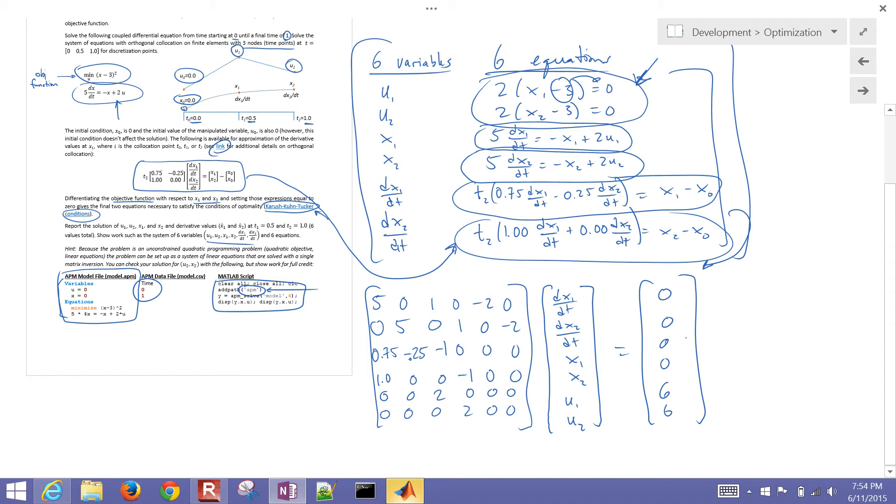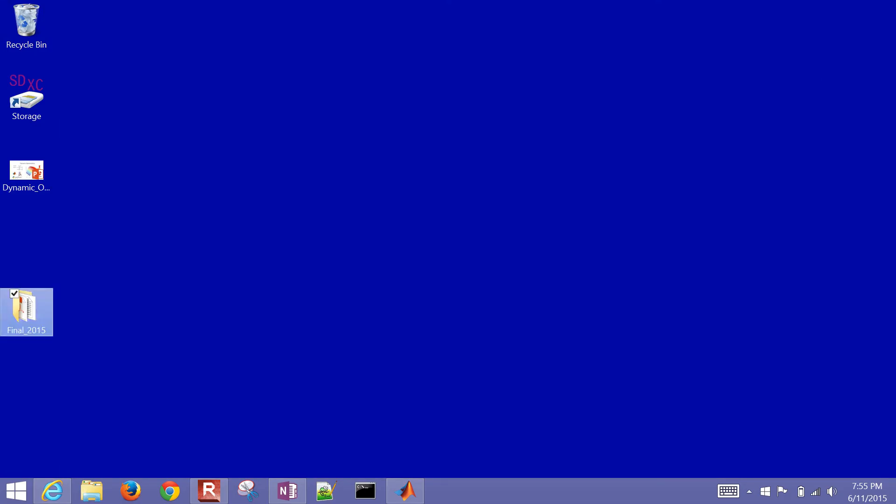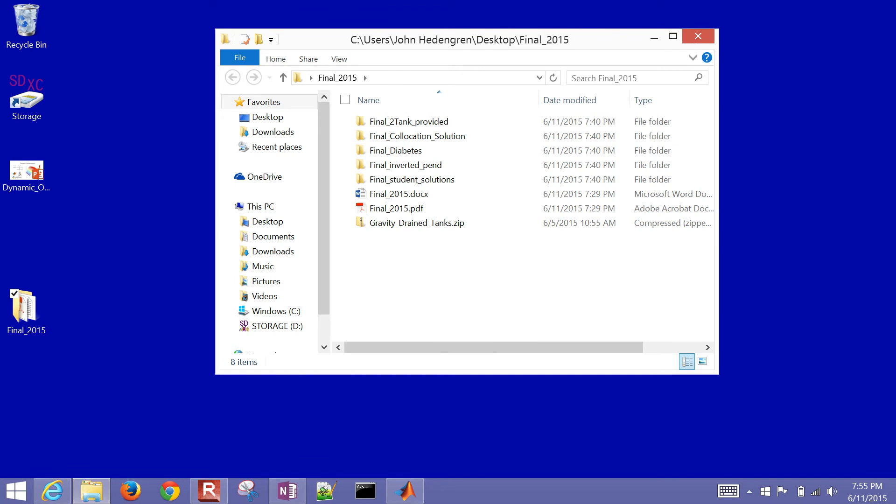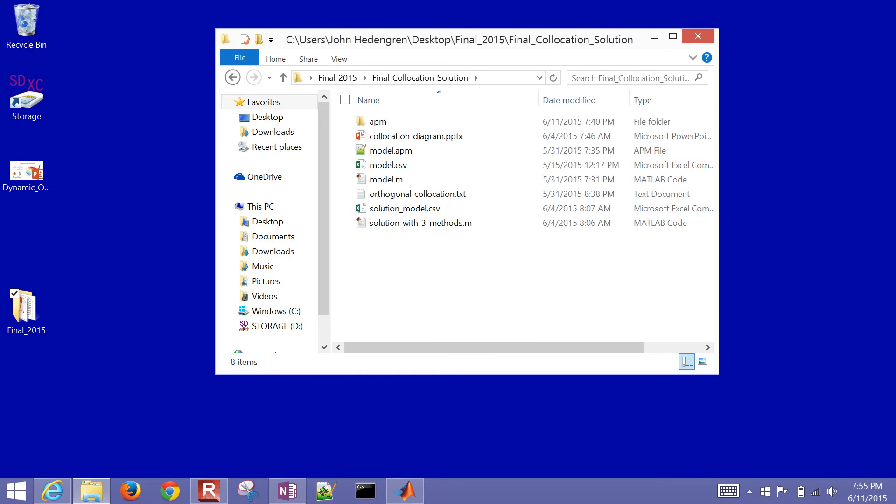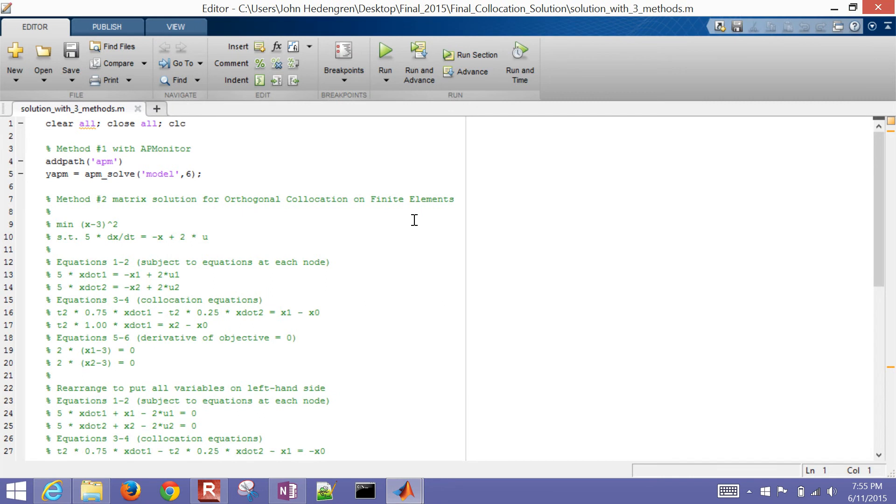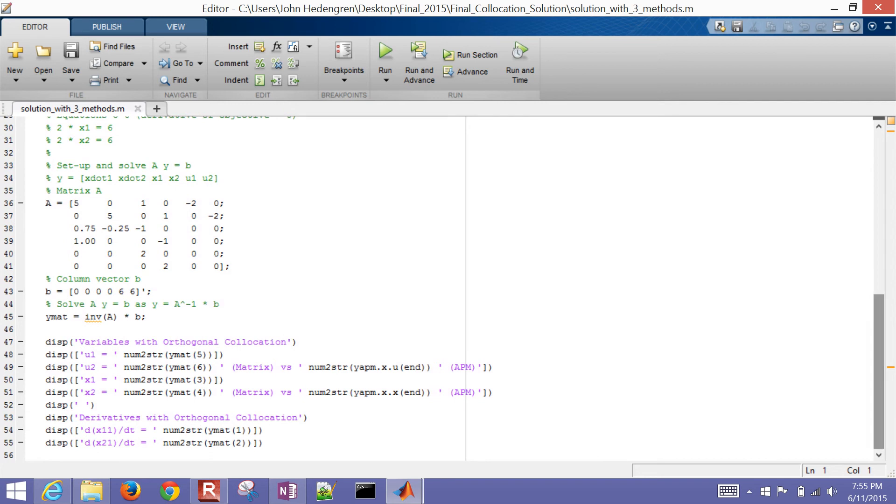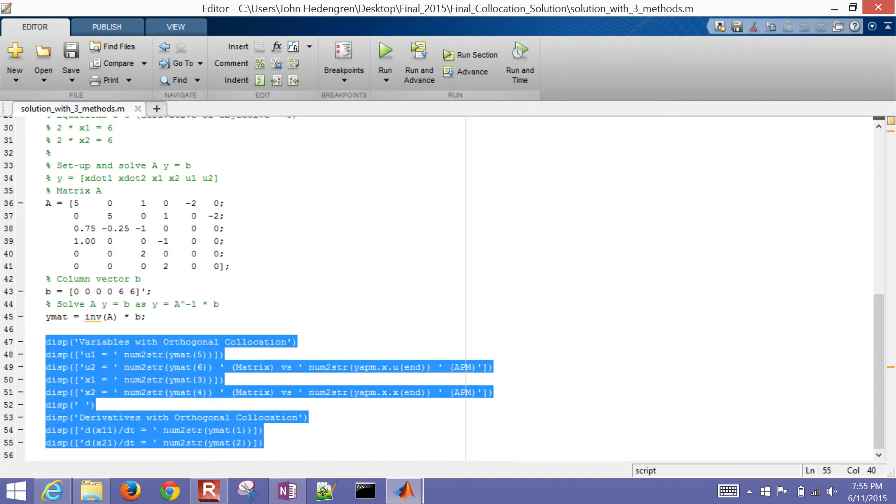Okay, so let's put this into MATLAB now and just solve for these values right here. And I'll make this available on the website as well. This is going to be the collocation solution. Just open up this solution with three methods. You can see it written out here with my A, B matrix. And then I go ahead and invert it as you can see here. And then I'll just display the solution.